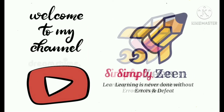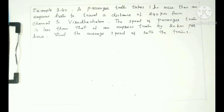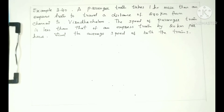Hello friends, welcome to my channel Simply Z, it's me Zarin. Example 3.40: A passenger train takes one hour more than an express train to travel a distance of 240 kilometers from Chennai to Virudachalam. The speed of the passenger train is less than that of an express train by 20 kilometers per hour. Find the average speed of both trains.